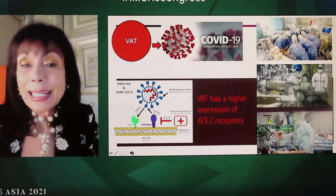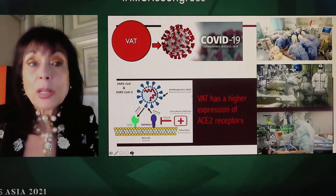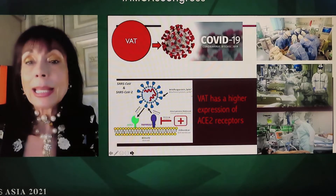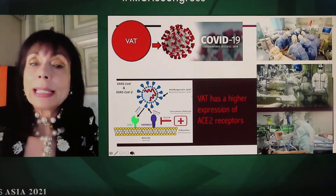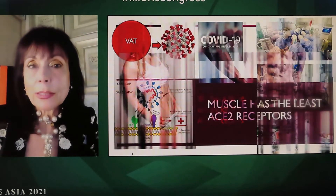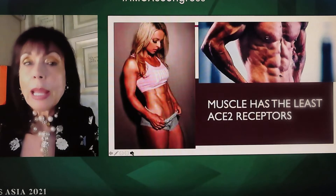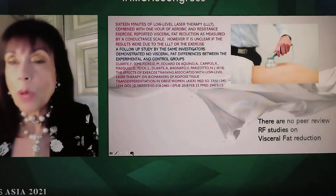Visceral adipose tissue increases the chances of getting COVID-19 and also prolonging hospitalization, because COVID-19 has an affinity for fat cells via ACE2 receptors in fat cells. Muscle, however, has the least ACE2 receptors. So the goal is to exchange fat with muscle, which provides additional protection — even if you do get COVID-19, you won't be overwhelmed by it.